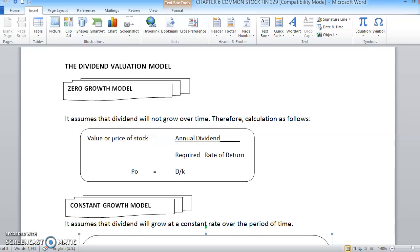So the first one in common stock model, we have the zero growth model iaitu model ini tidak memiliki growing ataupun growth dividend. Maknanya dividendnya tidak bertambah dari satu tahun ke satu tahun. So seakan-akan dividendnya adalah fixed. Kita katakan dia mempunyai annual dividend.